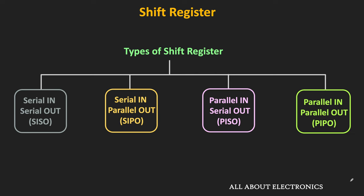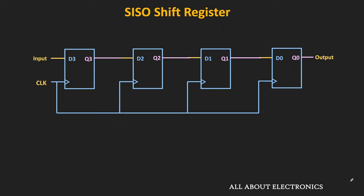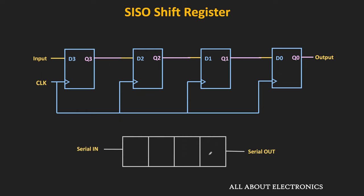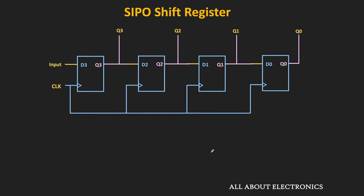First, let us talk about the Serial In Parallel Out type of shift register. In abbreviated form, this is also known as the SIPO register. The design of this SIPO register is very similar to the SISO register. In the SISO register, the output of one flip-flop is connected to the next flip-flop, but the outputs of intermediate stages are not available externally — only the input of the first flip-flop and the output of the last flip-flop are available. But in the SIPO register, the outputs of the intermediate stages are also available externally.